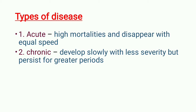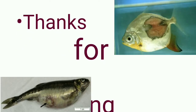There are also two types of disease. The first is acute disease, which has high mortality and will disappear with equal speed — there will be high mortality and then it disappears quickly. The second is chronic disease, which develops slowly with less severity but persists for a greater period. Chronic disease develops slowly and persists for longer periods. This is the important difference between acute and chronic diseases.